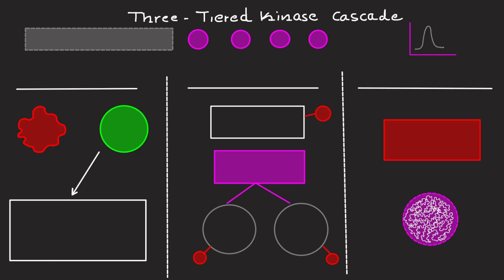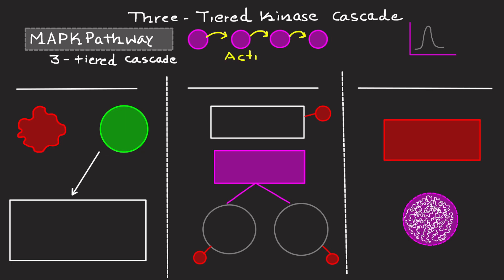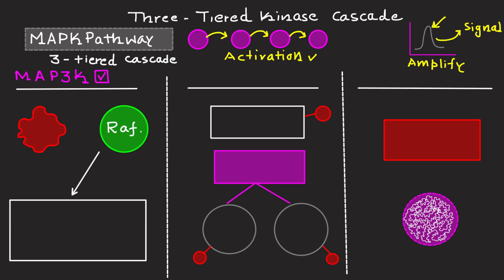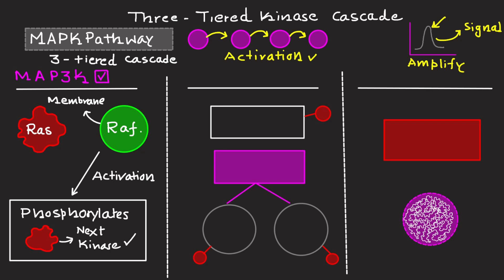The MAP Kinase Pathway operates through a three-tiered kinase cascade — a sequential activation of protein kinases that amplifies the signal as it moves downstream. Multiple molecules are involved and activated one by one, amplifying the signal. Starting with MAP3K, which is MAP Kinase Kinase Kinase: the first kinase in the cascade, RAF, is recruited to the membrane by RAS. Upon activation, it phosphorylates and activates the next kinase in the sequence.